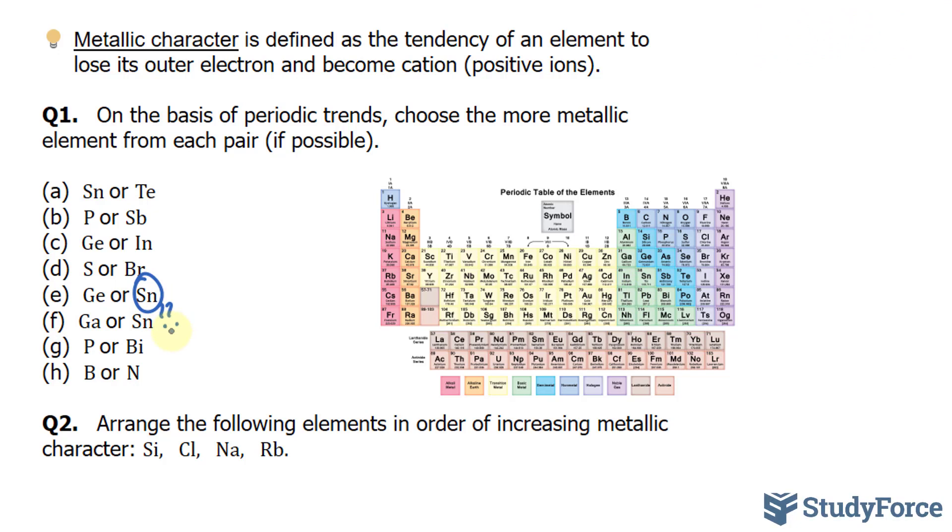Phosphorus and bismuth. Phosphorus is right here and bismuth is three rows down the column. So bismuth is the more metallic of the two.